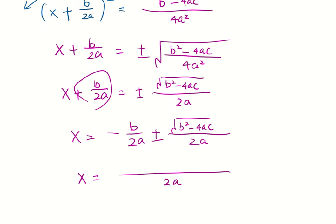Use the common denominator at the tops. Negative b plus or minus square root of b squared minus 4ac. And this is the quadratic formula.